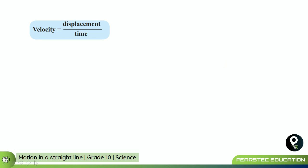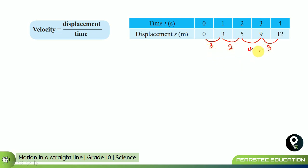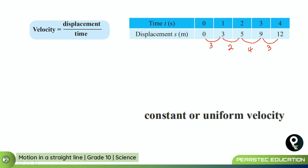The equation says velocity is equal to displacement divided by time. Now let's understand this chart. During the first second there is a displacement of 3 meters, the second second there is a displacement of 2 meters, the third second there is a displacement of 4 meters, and in the fourth there is a displacement of 3. But this is not uniform — 3, 2, 4, 3. When it is uniform, they call it constant or uniform velocity.